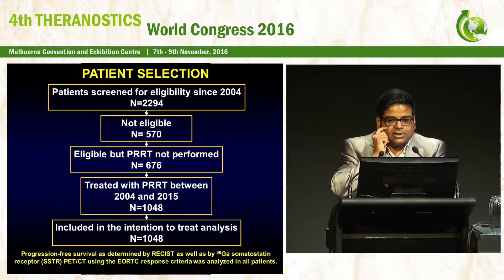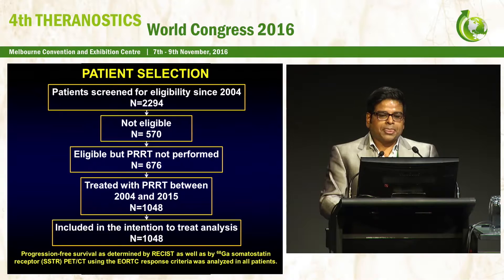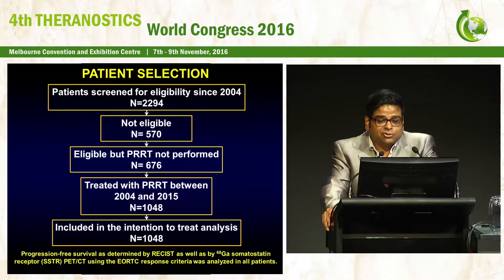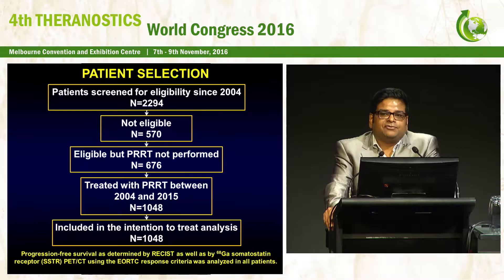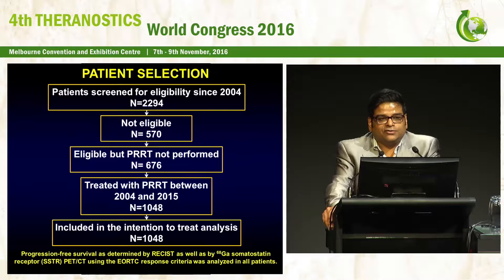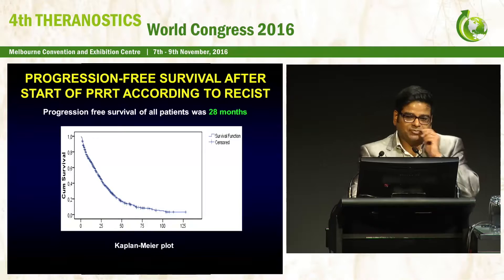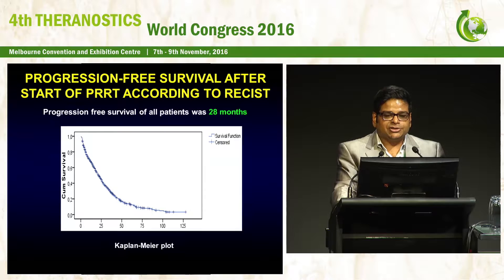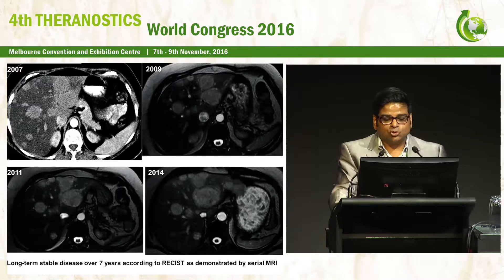Since 2004, we have screened about 2,300 patients. 676 patients were eligible but PRRT was not performed based on neuroendocrine tumor board consensus deciding the patient should undergo other treatments. Between 2004 and 2015, a total of 1,048 patients were treated with PRRT. The PFS of all patients was 28 months. This case shows a long-term stable disease over seven years, as demonstrated by serial MRI.